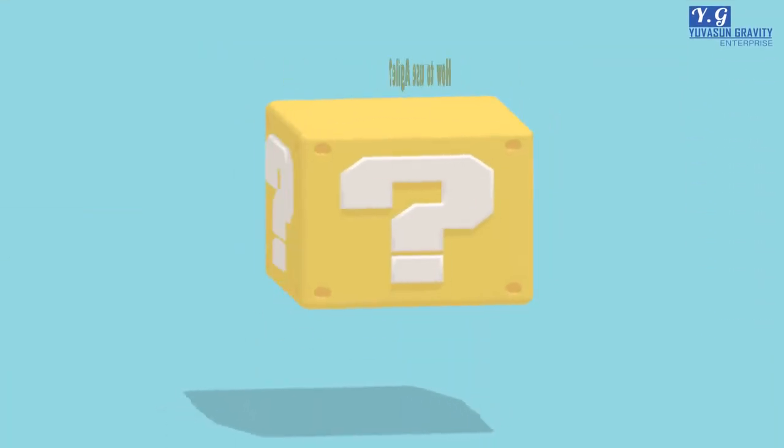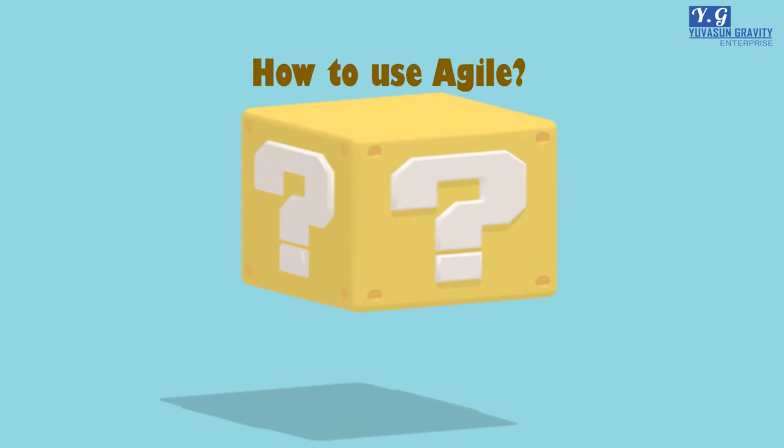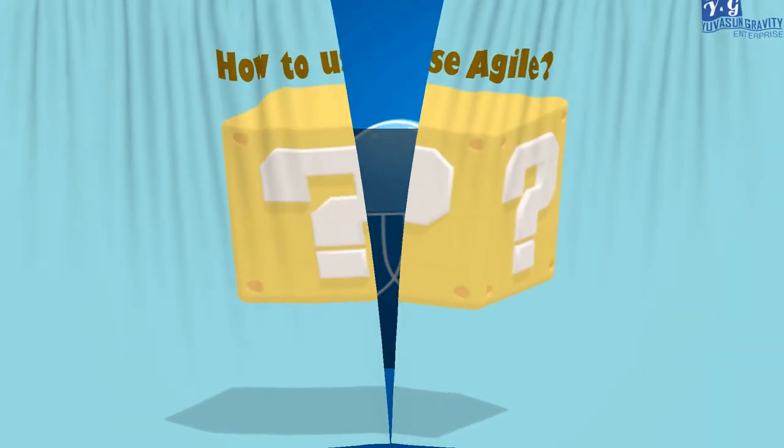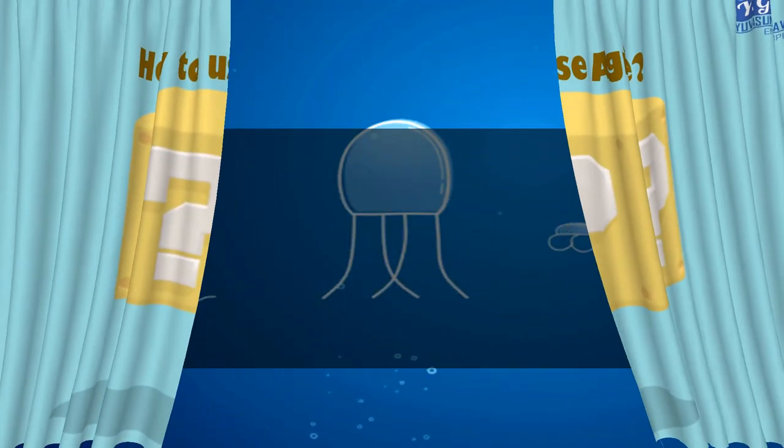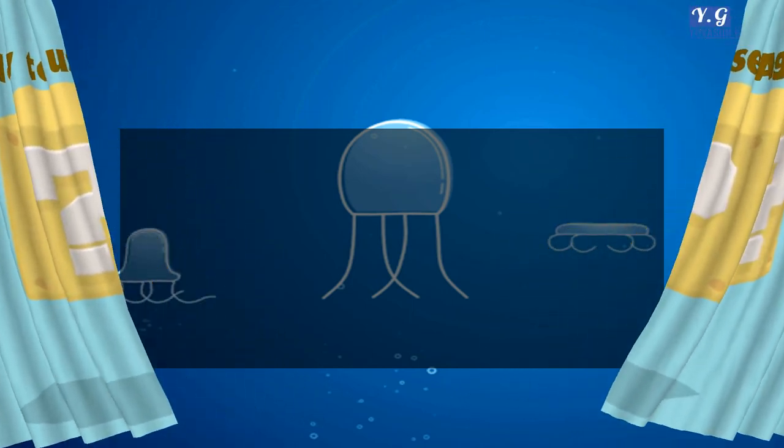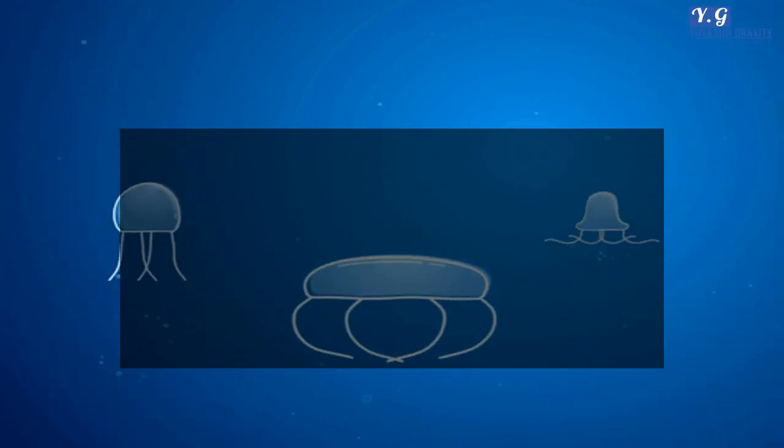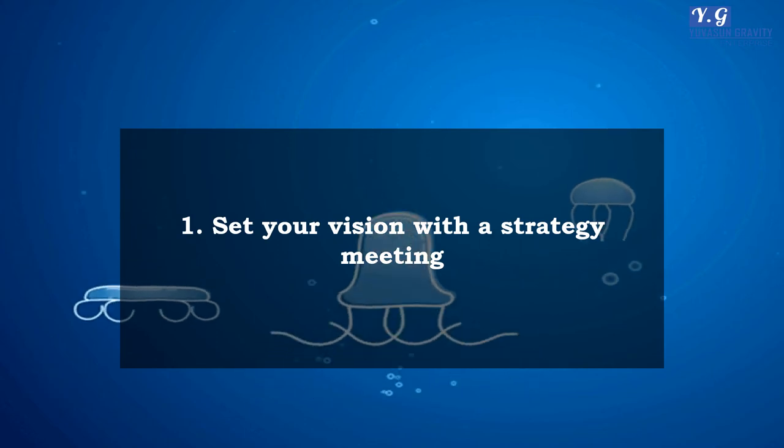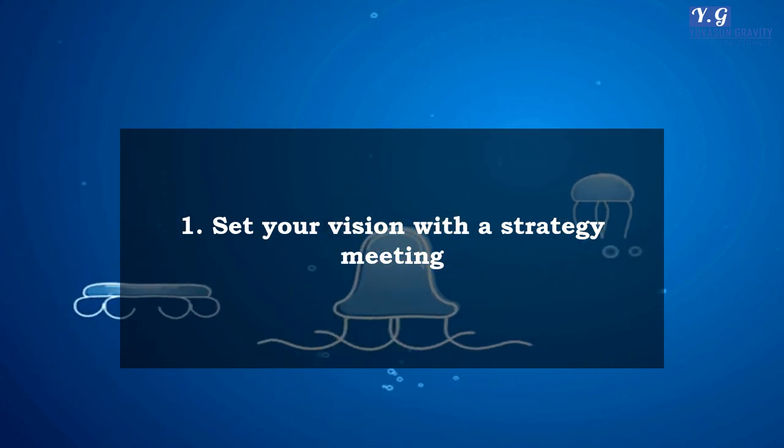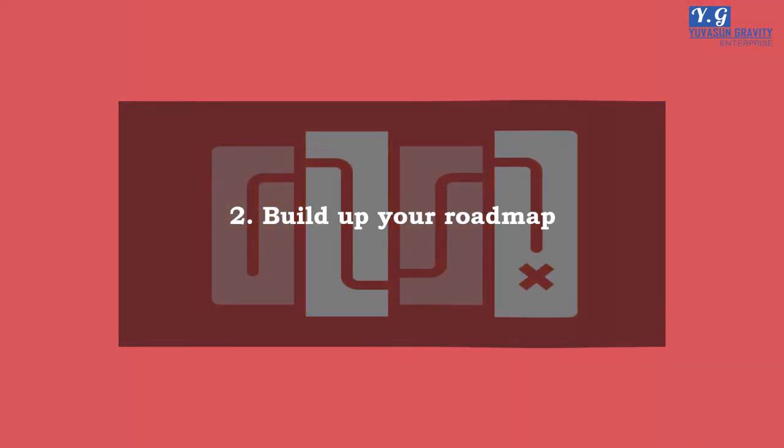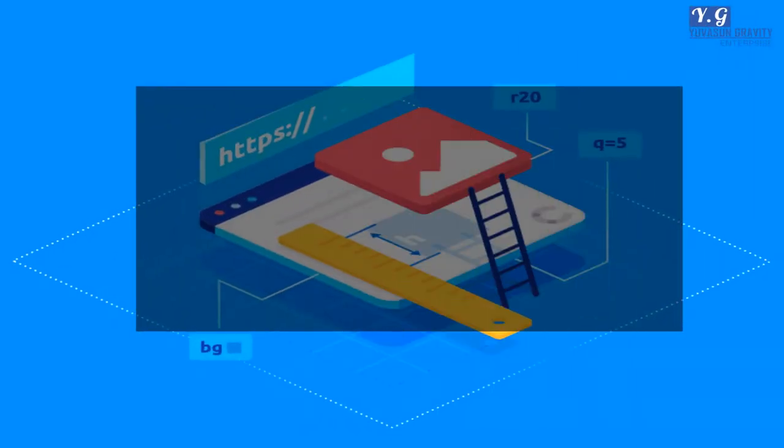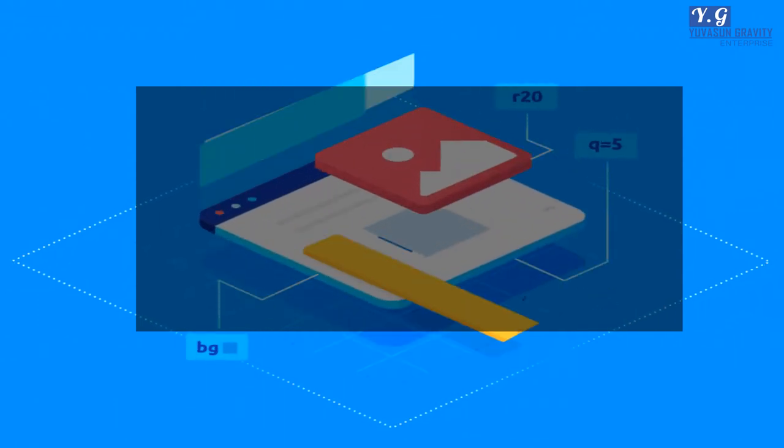How to use Agile? First, set your vision with the strategy meeting. Next, build up your roadmap. Third, get empowered with a release plan.